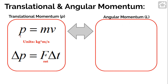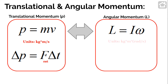Thinking back to translational momentum, P equals mass — which is translational inertia — times velocity. Angular momentum is expressed similarly: it equals rotational inertia times angular velocity. So L equals I times omega. The units for angular momentum are kilogram times meters squared, from rotational inertia, multiplied by radians per second from angular velocity.